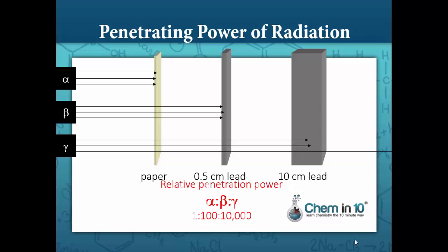Their relative penetration power, alpha to beta to gamma, is 1 to 100 to 10,000. This means that the beta particle has 100 times the penetrating power of the alpha particle, and the gamma ray has 10,000 times the penetrating power of the alpha particle. This also means that gamma rays have 100 times the penetrating power of beta particles, because 10,000 to 100, or 10,000 divided by 100, is equal to 100 times.